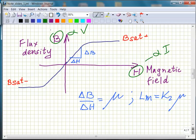This BH curve has some slope. Here's the slope. And this slope represents the permeability. Delta B over delta H is the permeability.